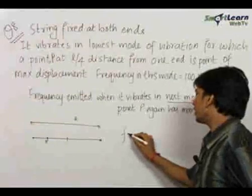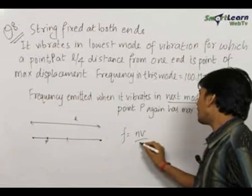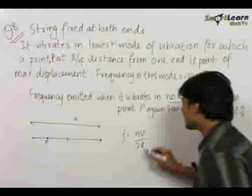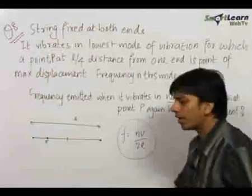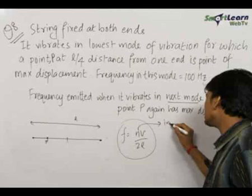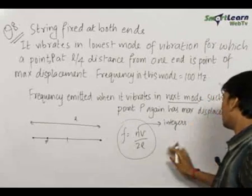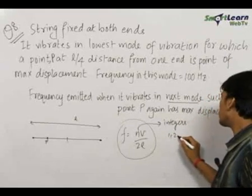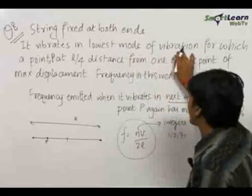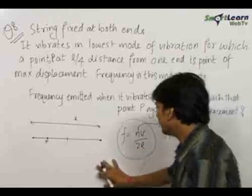For a string fixed at both ends, the different frequencies are Nv/2L, where N takes integer values 1, 2, 3, and so on. We need the lowest mode of vibration, which means the minimum number of loops, that is the minimum frequency.